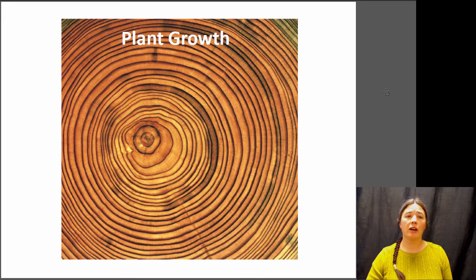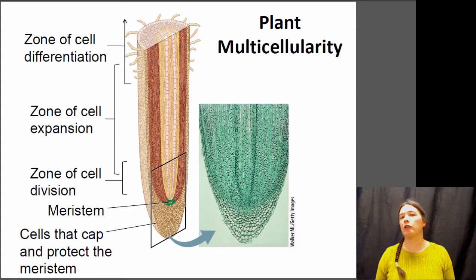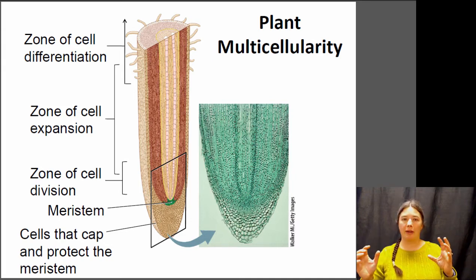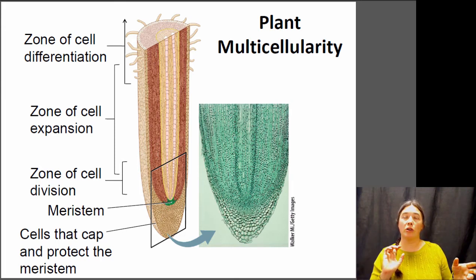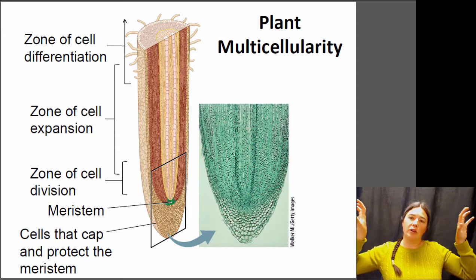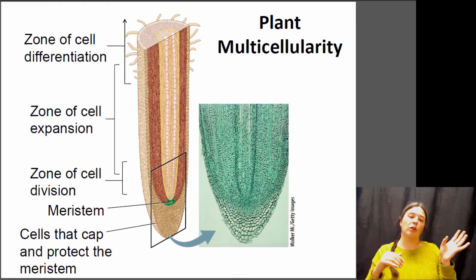If you look at a plant, one of the things that they have that's different from a lot of animals is that they have cell walls. Cell walls prevent cells from really moving once they've grown or divided. So plants have very specific areas where things are happening: specific areas where cells are dividing — near root or shoot tips — areas where cells are growing and getting bigger, and areas where they differentiate into the different tissue types within the plant.